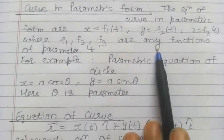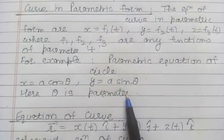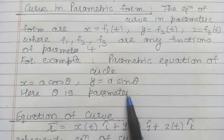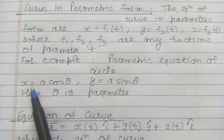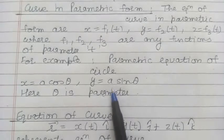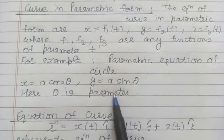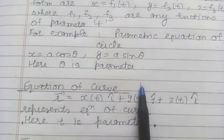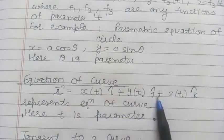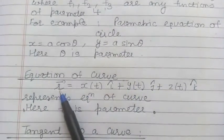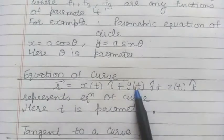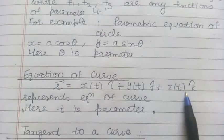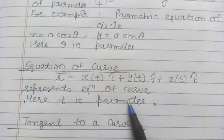Let us see by an example. If you have to write the parametric equations of a circle, the parametric equations are given by x = a cosθ, y = a sinθ, where θ is the parameter. Generally, we can write the equation of a curve in vector form as r = xi + yj + zk, where x, y, and z are functions of the parameter t.